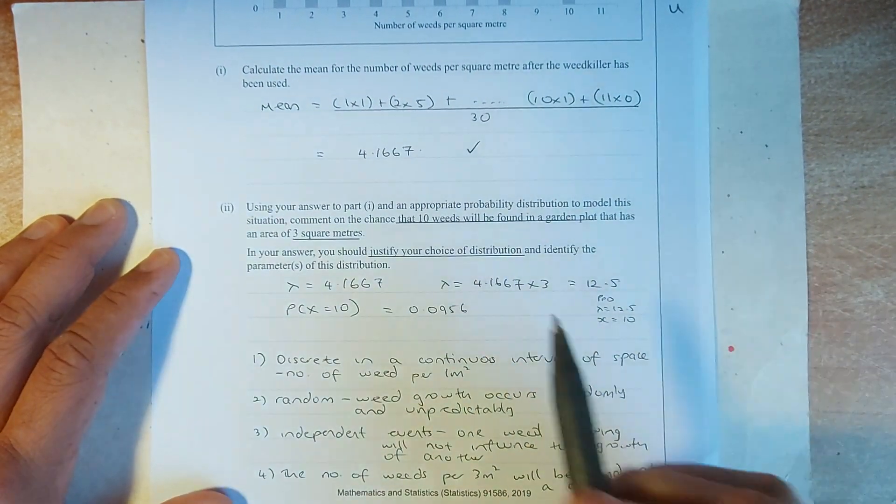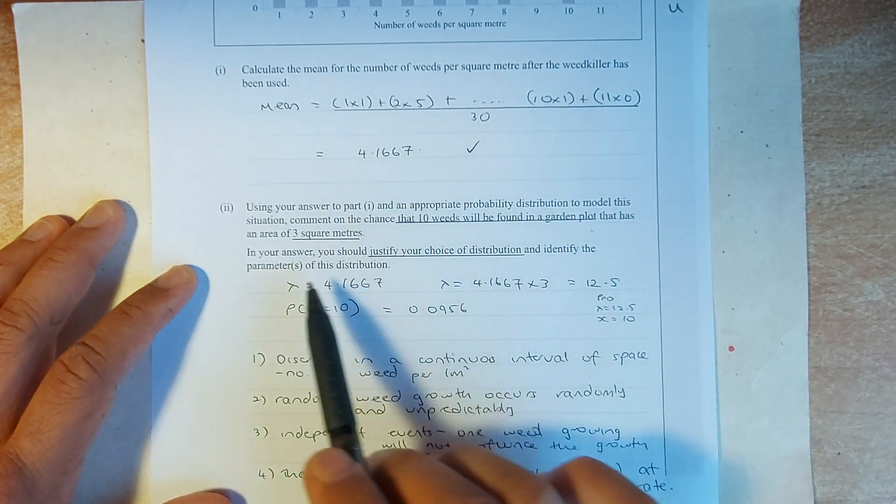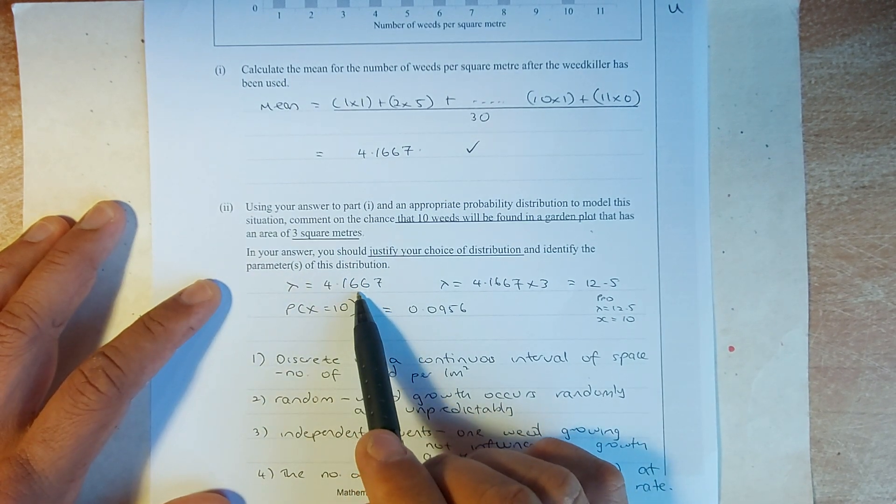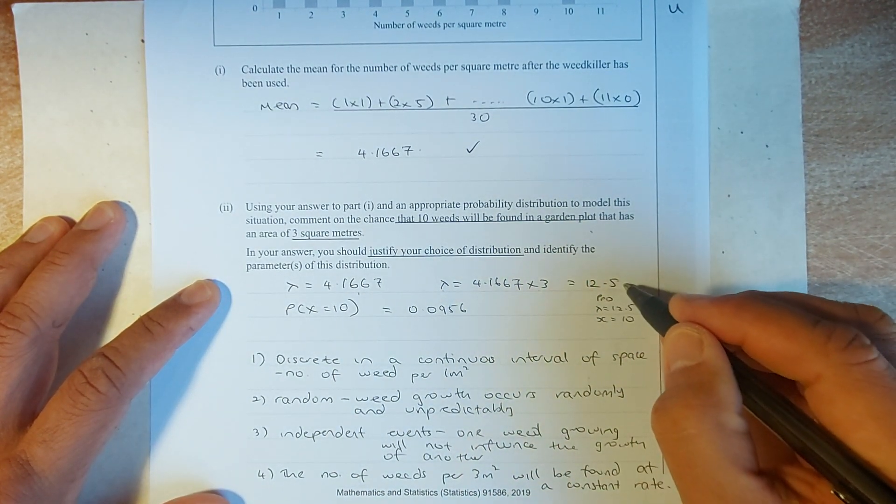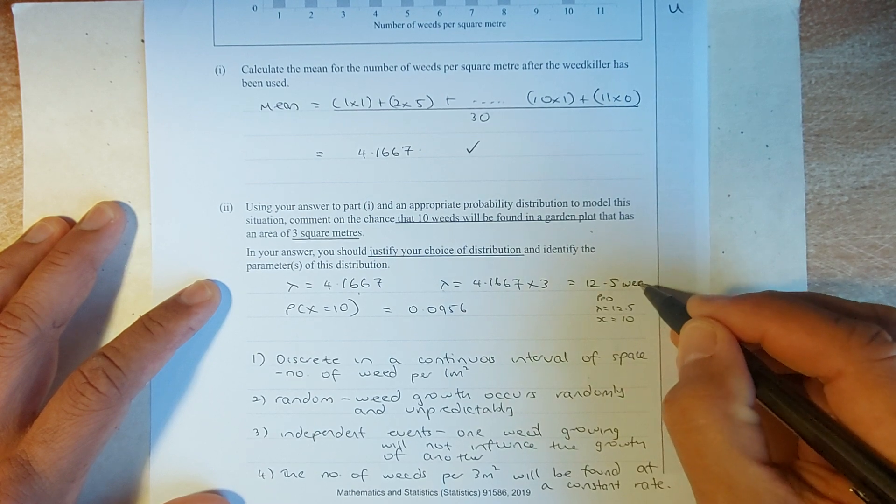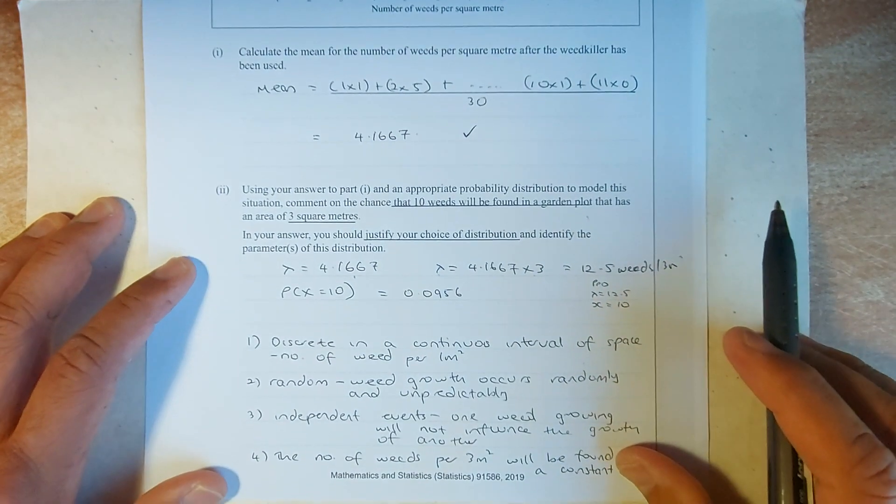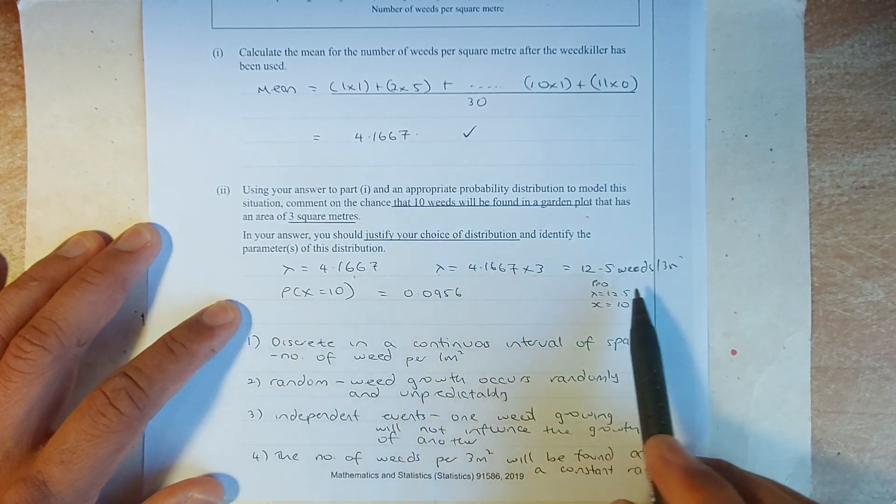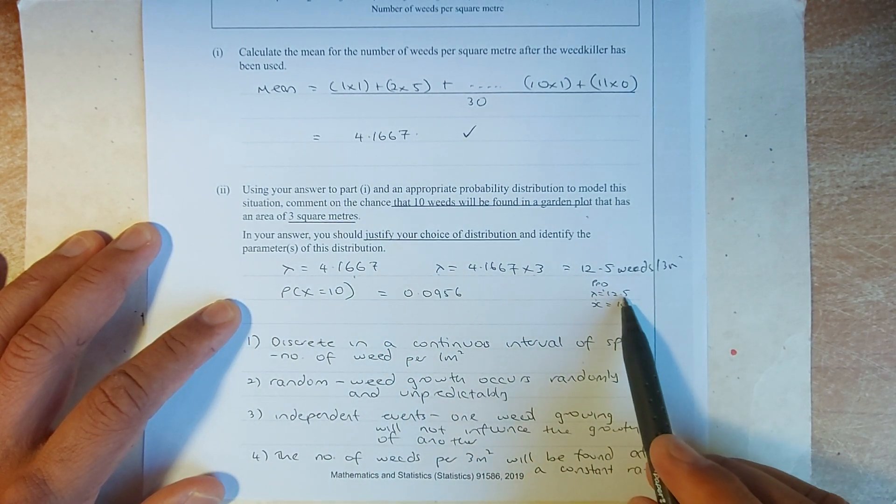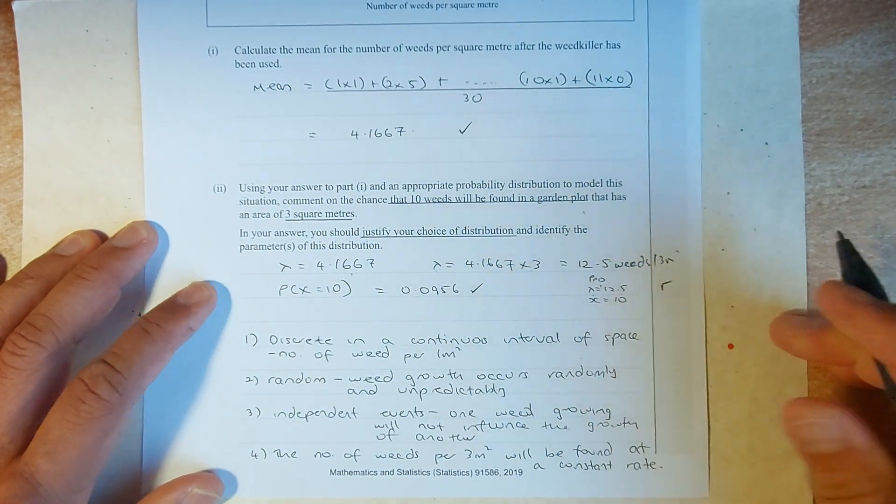Okay. Now, the question asks you. What is the chance that 10 weed will be found in a garden plot? So, you need to calculate, but it has an area of 3. So, if 1 meter squared is lambda is 4.1667, to get lambda for 3 meter squared, you multiply by 3, and they will give you 12.5 weed per 3 meter squared. So, to calculate the probability, you are going to just use the normal PPD, because this is the point, x is equal to 10, put in your calculator, PPD, lambda is 12.5, x is equal to 10, and put in your calculator, and that will give you the answer, and that will give you a merit.